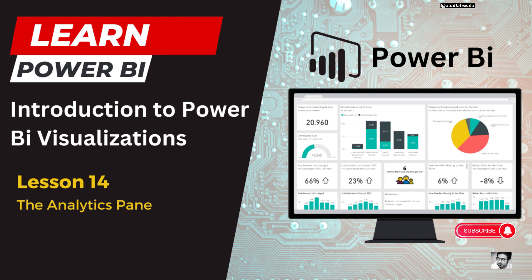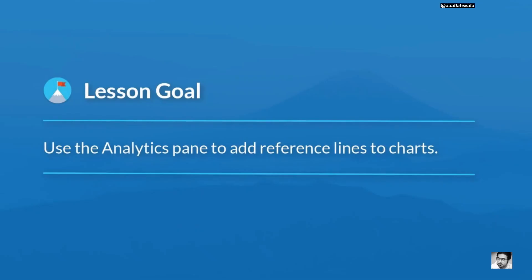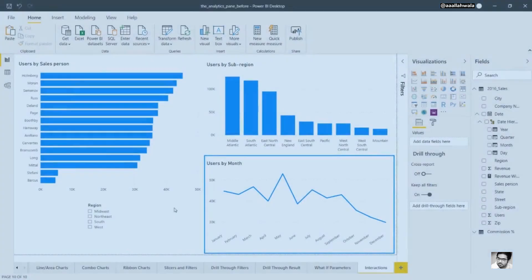In the previous lesson, we learned how charts can be used to filter each other through interactions. In this lesson, we'll look at how we can use the Analytics pane to add dynamic reference lines to our charts. These can be particularly useful when evaluating performance, as they can allow us to compare data with targets, averages, or other useful metrics. We'll examine the Analytics pane using the visuals we created in the previous lesson.